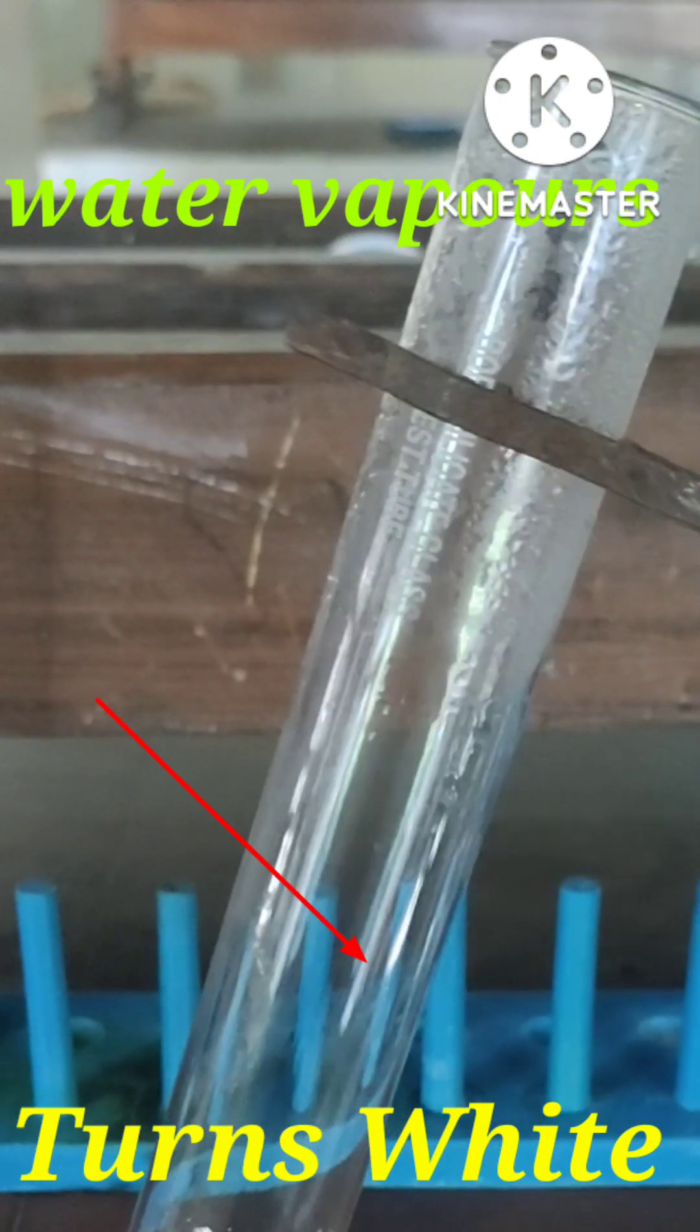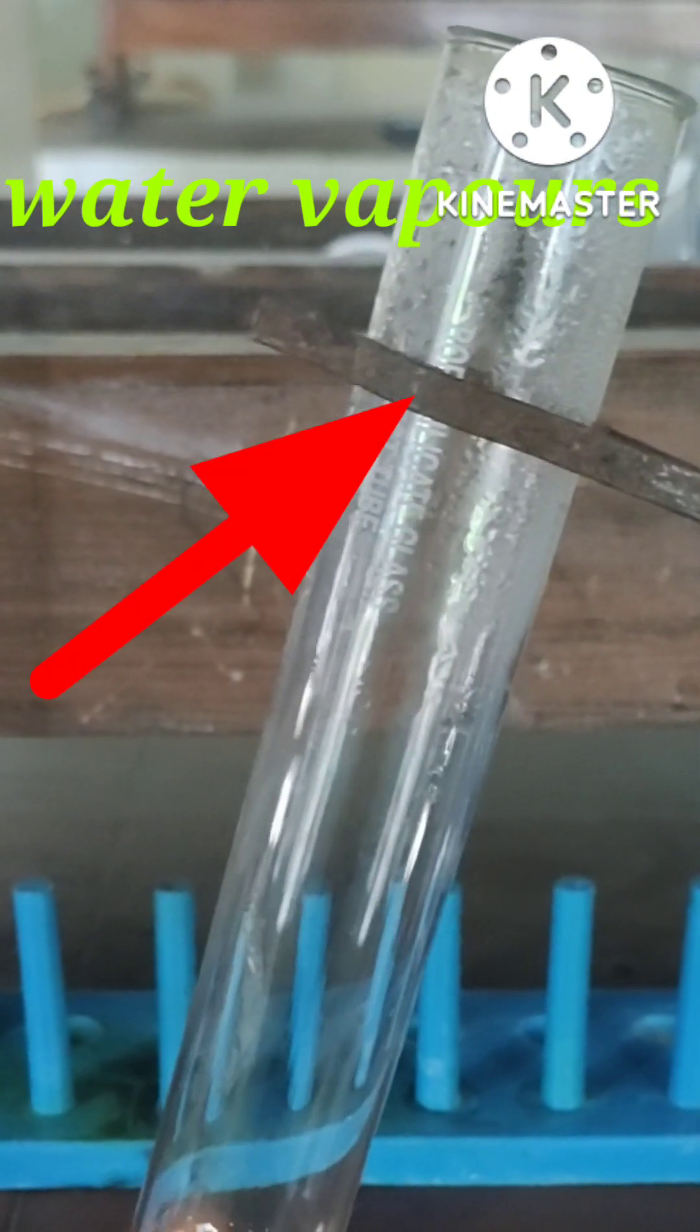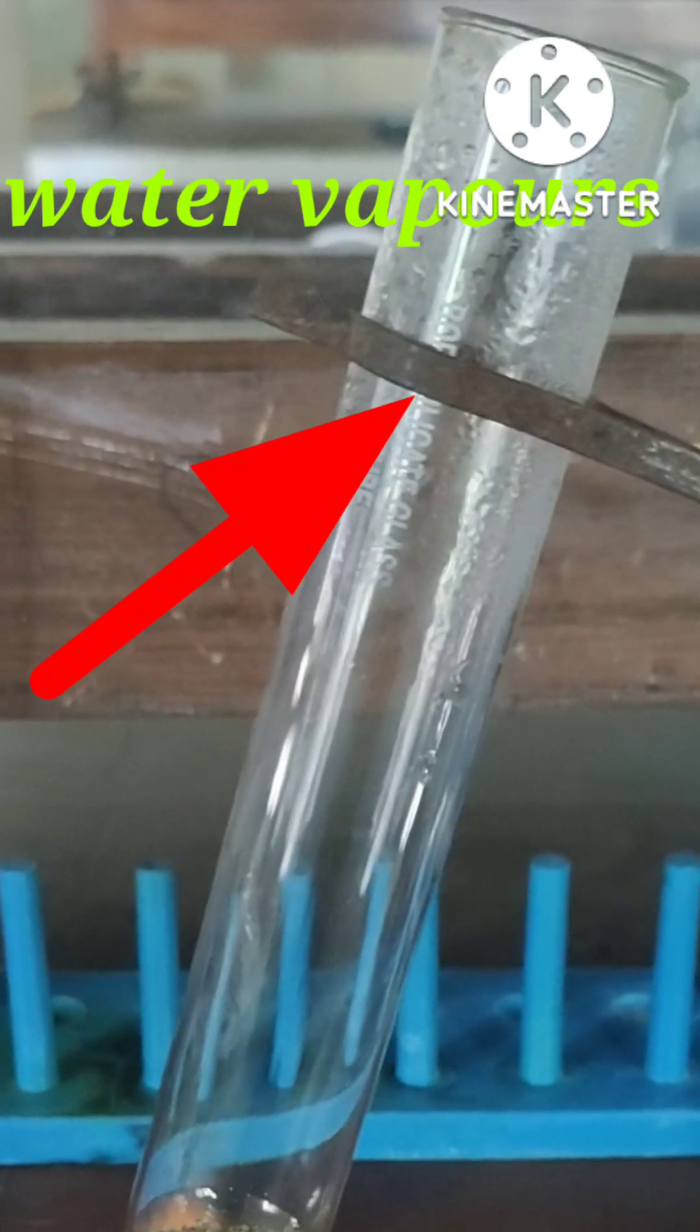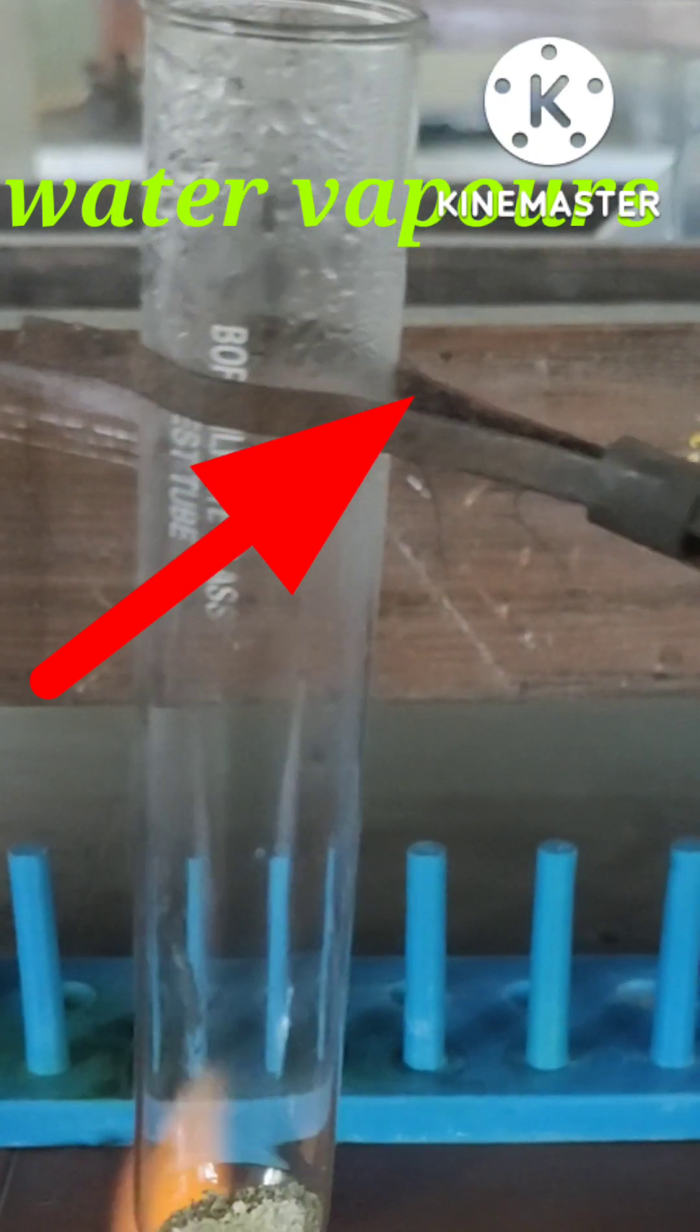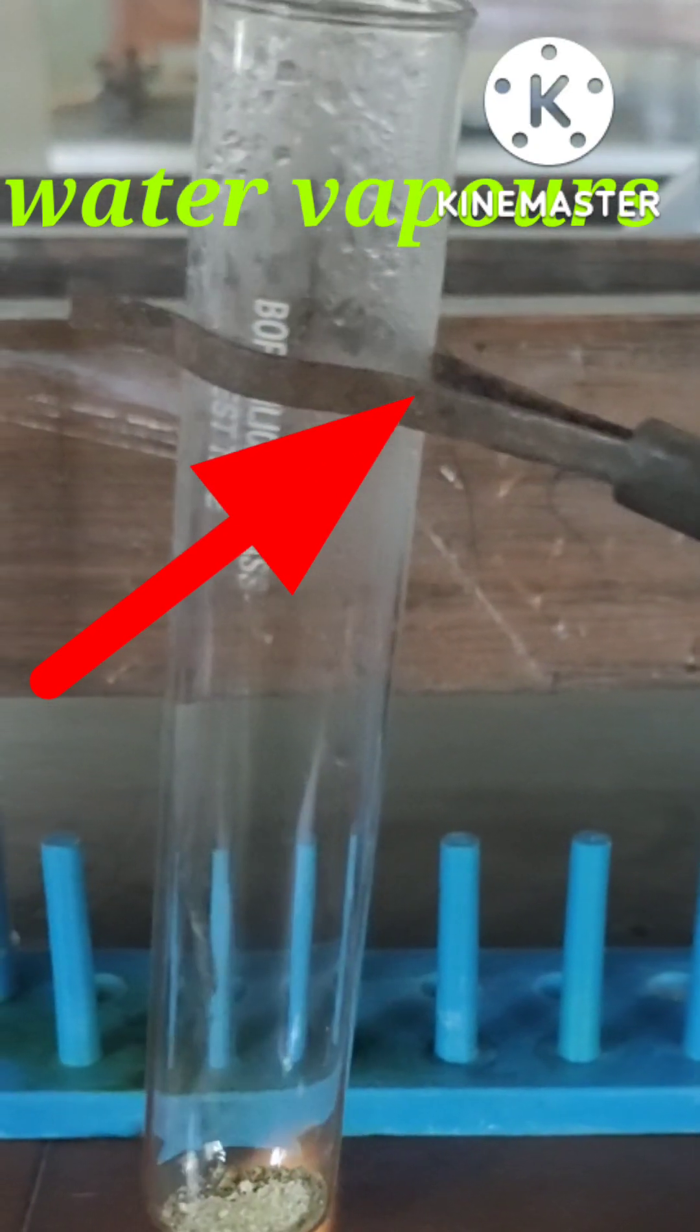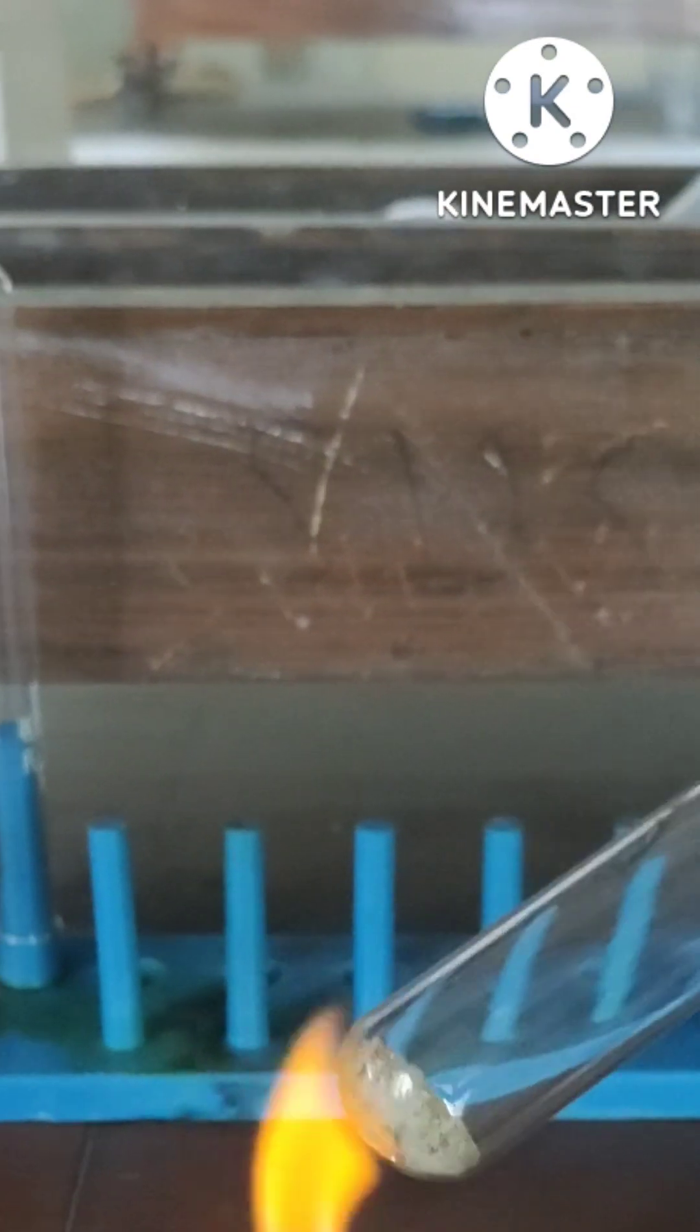Also, the color changes from green to white. Some water vapors are also seen, as the ferrous sulfate contains 7H2O in its formula.